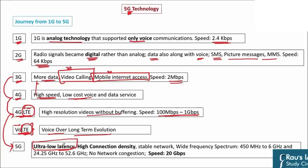Secondly, the connection density can be high in 5G. Presently in a 4G hotspot, if 10 people get connected the speed becomes ultra slow. That problem will not exist in 5G — more than 20 people can easily connect to a single 5G hotspot. Thirdly, 5G will provide a more stable network. The call drops you experience when moving from one mobile tower to another, even with the same service provider, will also be reduced in 5G.